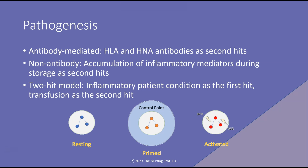Looking at the diagram, we have this resting lymphocyte, and then something happens to cause it to be primed — meaning it's ready to go, ready to attack, ready to become activated and part of the inflammatory immune response. Maybe it's an autoimmune disease that the patient has. Now we get blood in there that has the HLA and HNA antibodies, and those are the second hits that cause the activation and the immune response in the lung.